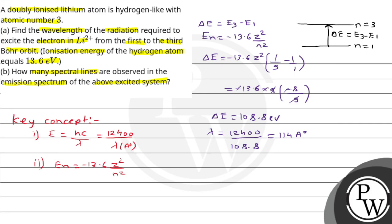अभी हमें spectral lines चाहिए। जो transition हो रहा है वो first level से third वाले level में हो रहा है। Number of spectral lines का formula होता है: n(n−1)/2, जहाँ n वो highest orbit है जिसमें atom excited है। यहाँ n = 3, तो 3 × 2 / 2 = 3। तो emission spectrum में total 3 spectral lines observe होंगी।